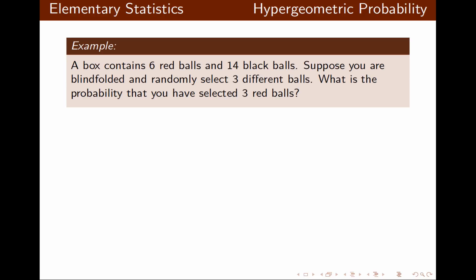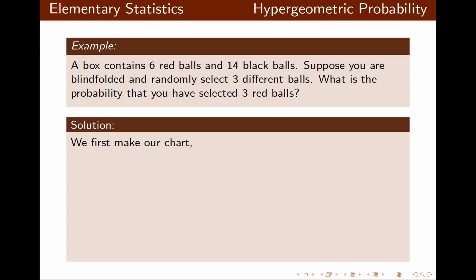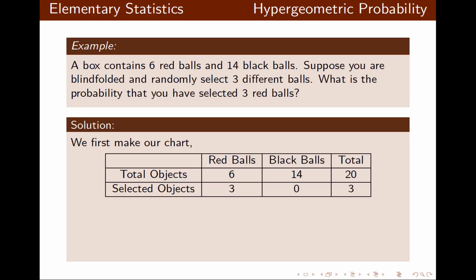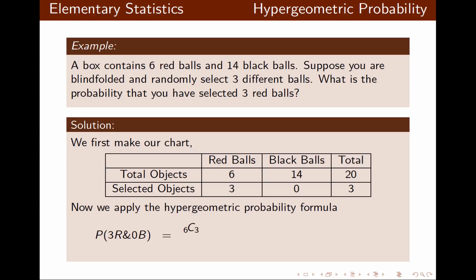The box contains six red balls and 14 black balls. Suppose you are blindfolded and randomly select three different balls. What is the probability that you have selected three red balls? We make our chart: six red, 14 black, for a total of 20 balls. Our desired event is to select three red balls out of three selections, leaving zero black balls. Using the hypergeometric probability formula: 6C3 for the red balls, 14C0 for the black balls, divided by 20C3 for all 20 balls. This probability is 1 over 57.